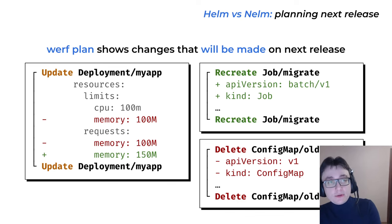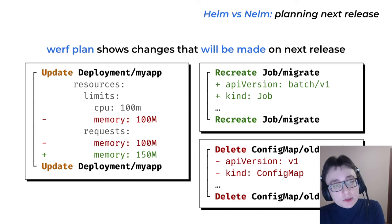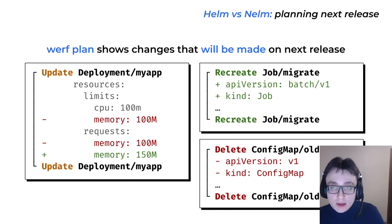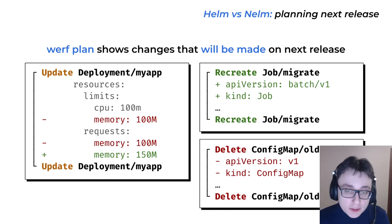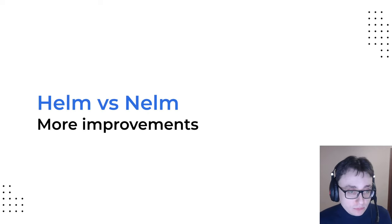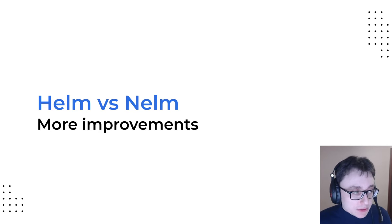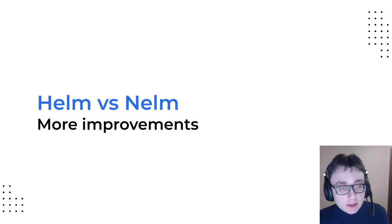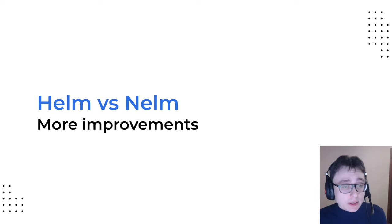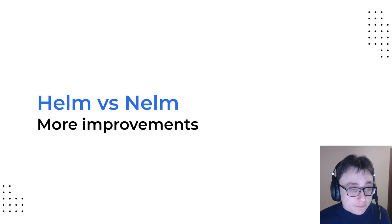That's how it usually looks when you call the 'werf plan' command: there is a diff for the deployment showing it will be updated with one field deleted and one field changed, a job will be recreated, and a config map will be deleted. I've now talked about probably the most interesting and most major improvements in Nelm and Werf.